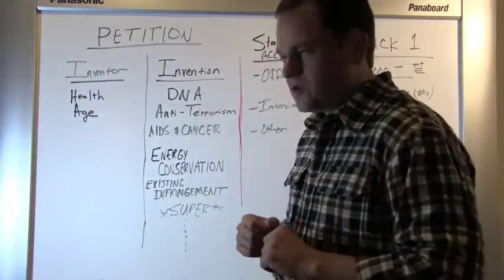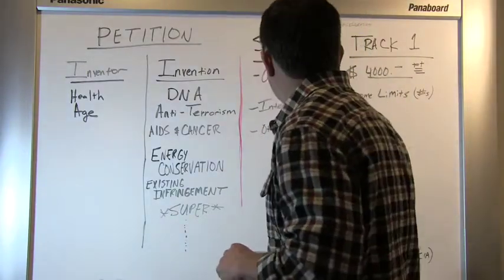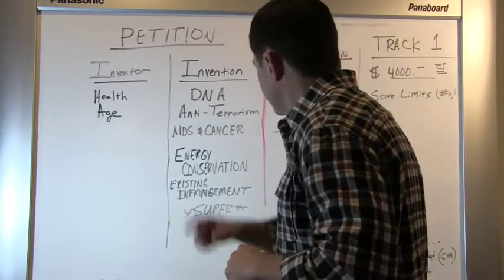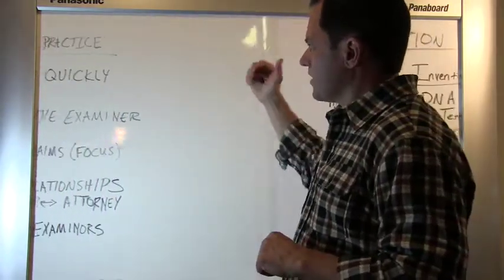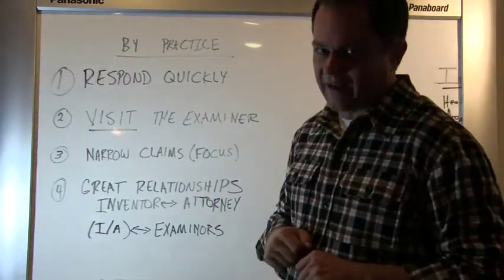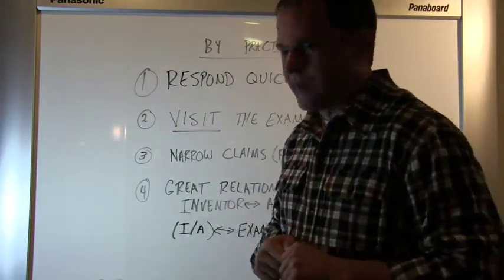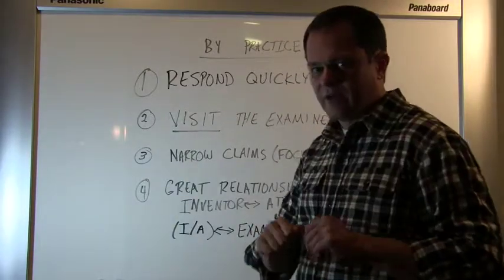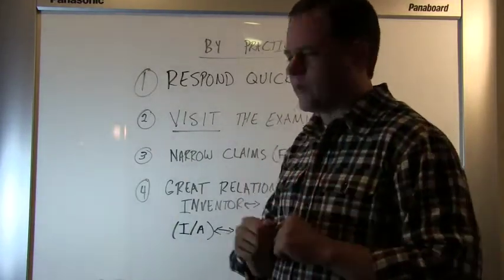So I mentioned that there are two categories. One is through petitions and formal acceleration. And the second is through what we call just regular practice within the patent office. So you can accelerate your patent application by practice by working with your patent attorney to do some really simple things.